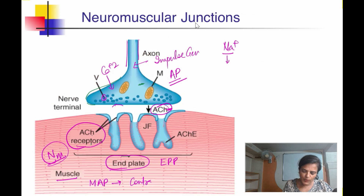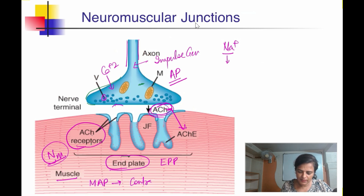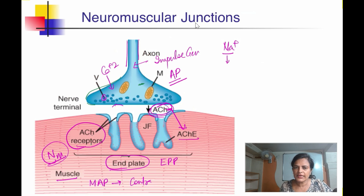Now what happens to this acetylcholine? It is hydrolyzed by acetylcholinesterase. So acetylcholine comes, binds, and then unbinds. The muscle is again repolarized and ready for the next impulse.